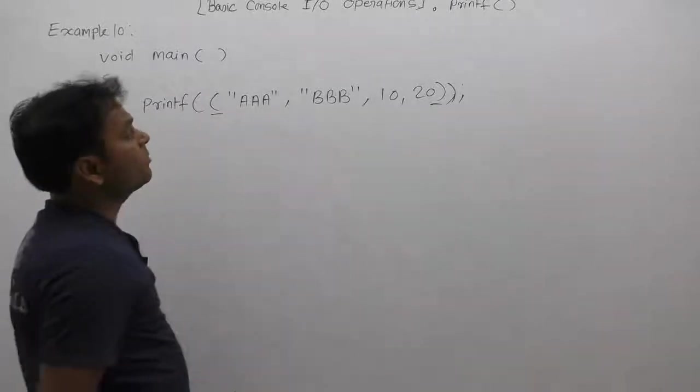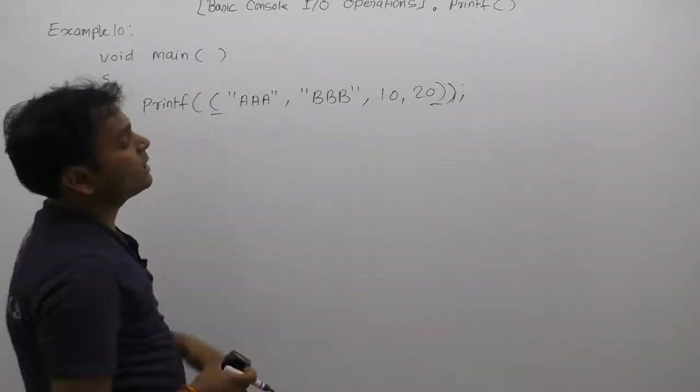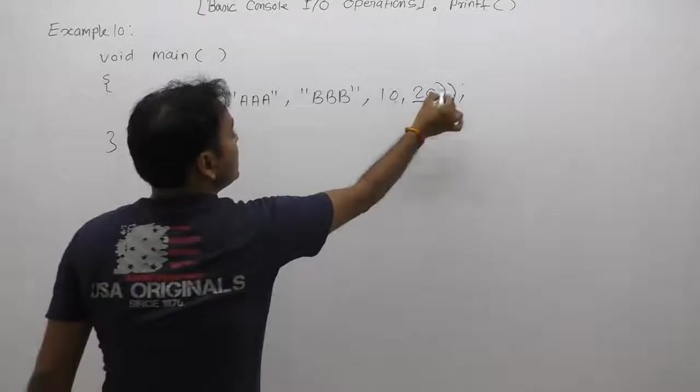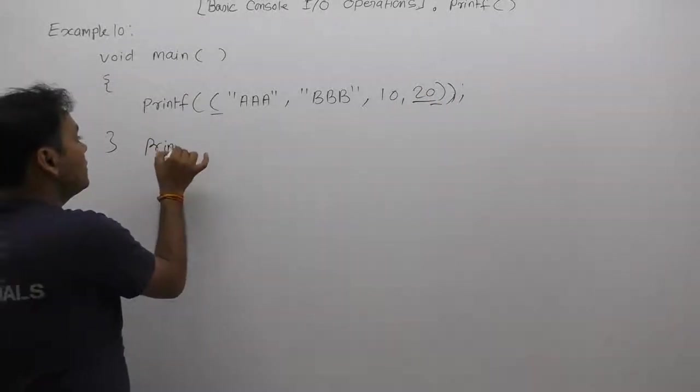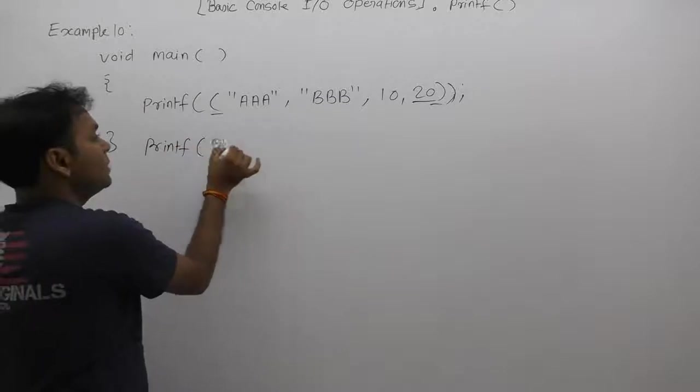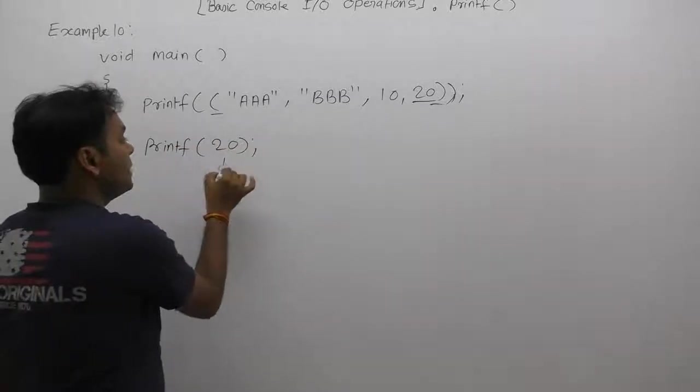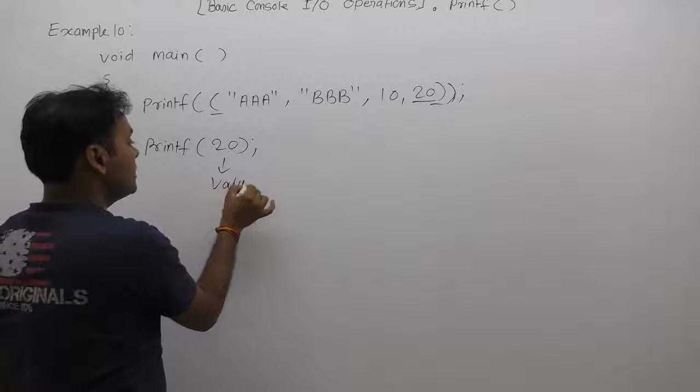According to the behavior of the comma operator, it will return the value of the last operand, which is 20. Therefore, in that printf, the return value of the inner expression is 20. Which is value 20, a question value or address value?